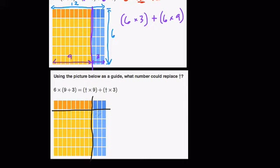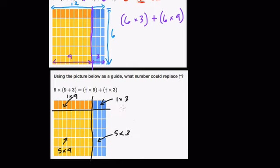Then you can model it this way: this piece is 1 by 3, and this piece right here is 1 by 9. This piece, just bear with me on this, is 5 by 9. And this piece right here is 5 by 3. So essentially, if we add all these up, we have 5 times 3, plus 5 times 9, plus 1 times 9, plus 1 times 3.